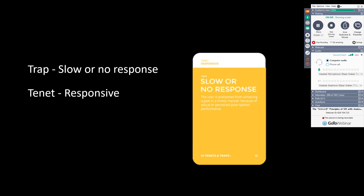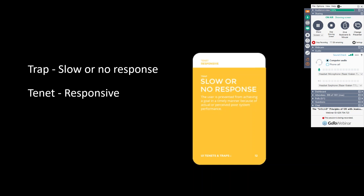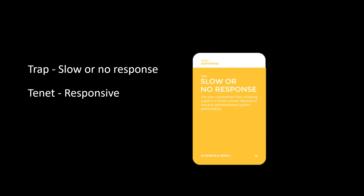Tenants describes general attributes of good interface design — everything that we want in a user interface. Traps describes common design problems that degrade all that goodness. So reduce the traps and the experience will improve. Tenants and traps are also related to each other — each trap has a tenet that it degrades. For example, if someone says your app is slow or doesn't respond, it will degrade the tenet 'responsive.'